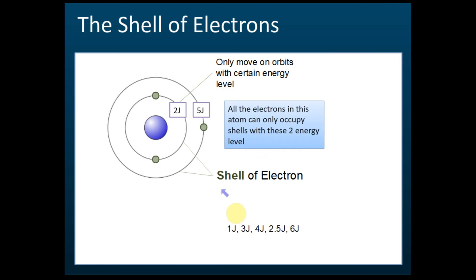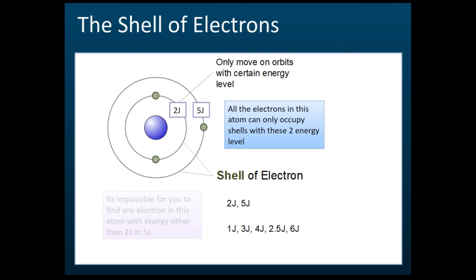All other energies — one joule, three joules, four joules, two point five joules, six joules — are impossible for the electrons. The electrons can only move with two joules or five joules. Any other energy level is impossible, so you will never find an electron in this atom with any energy other than two joules or five joules.